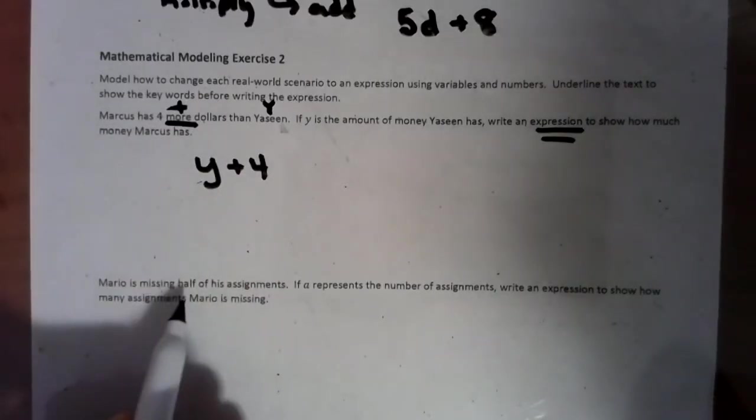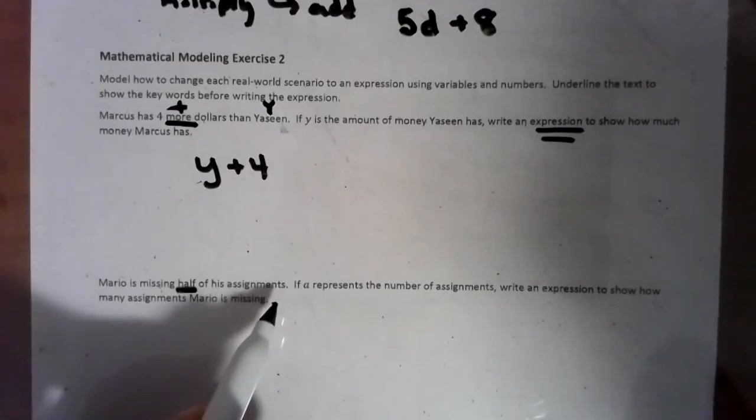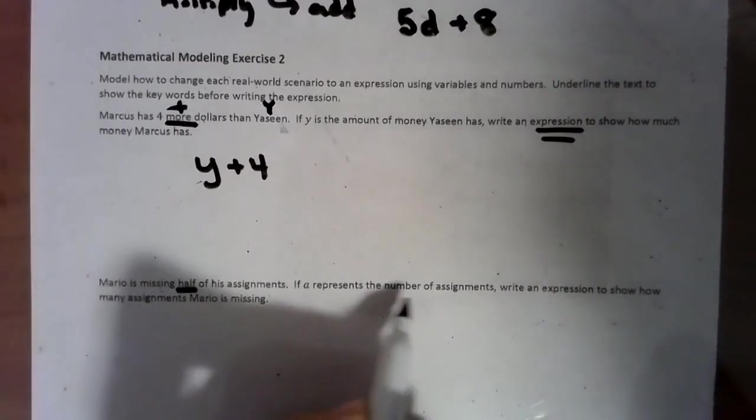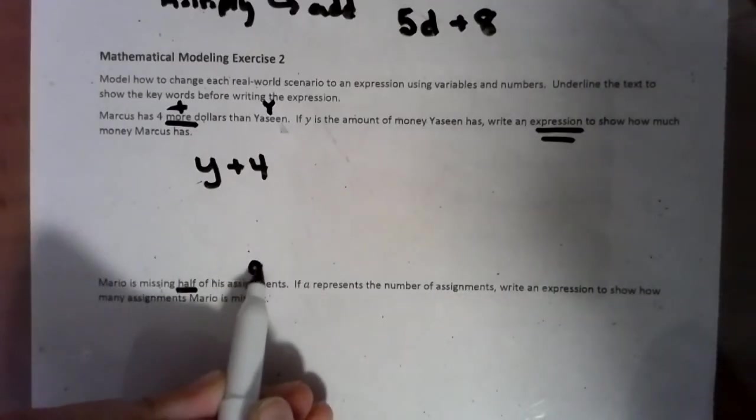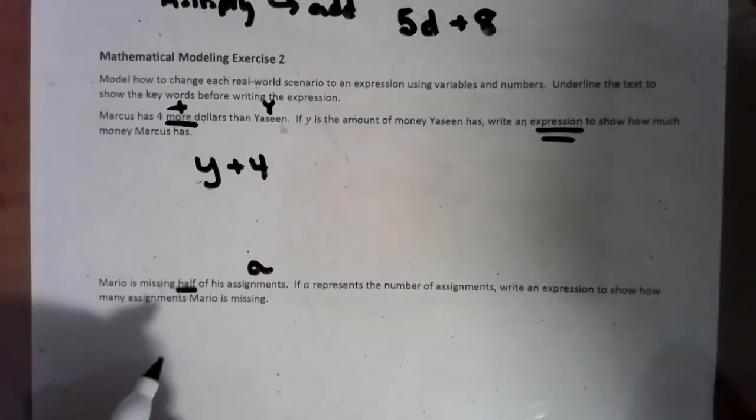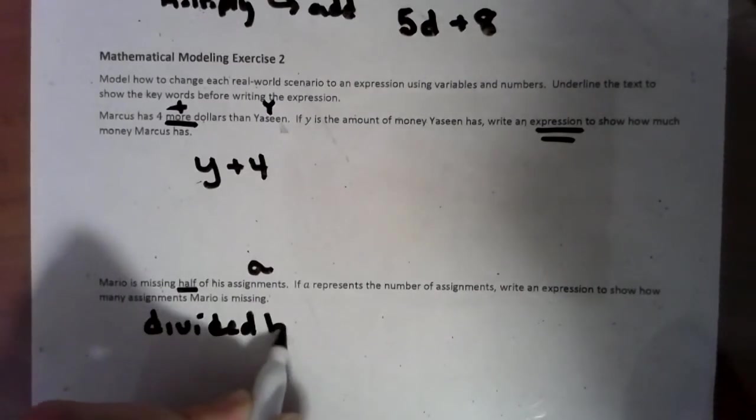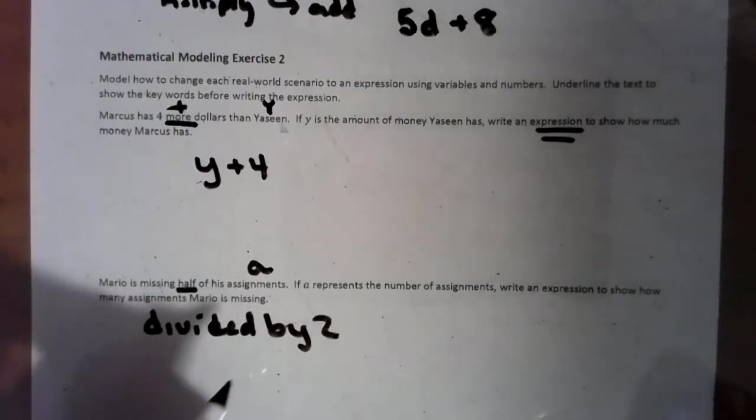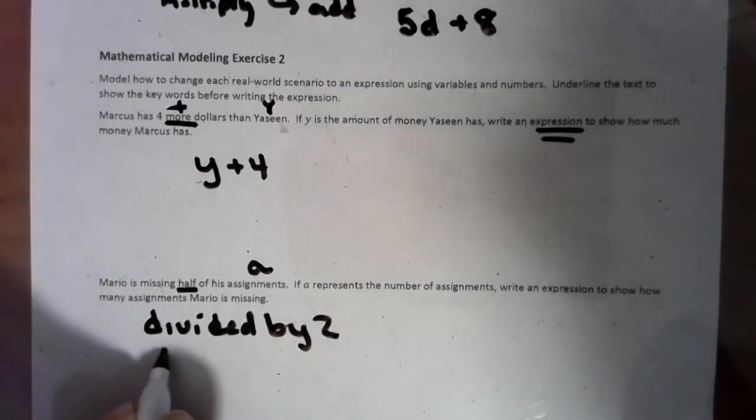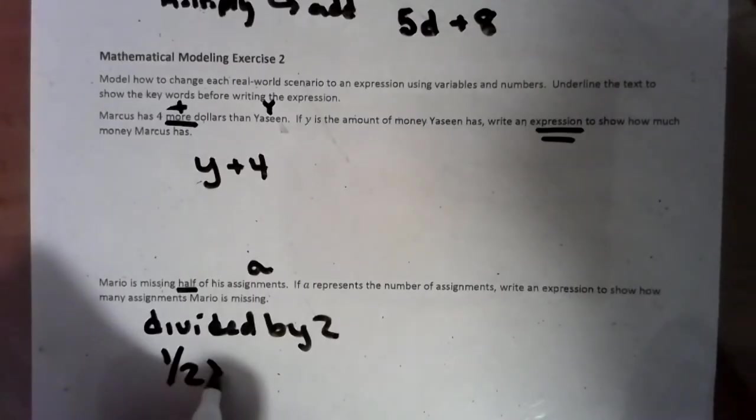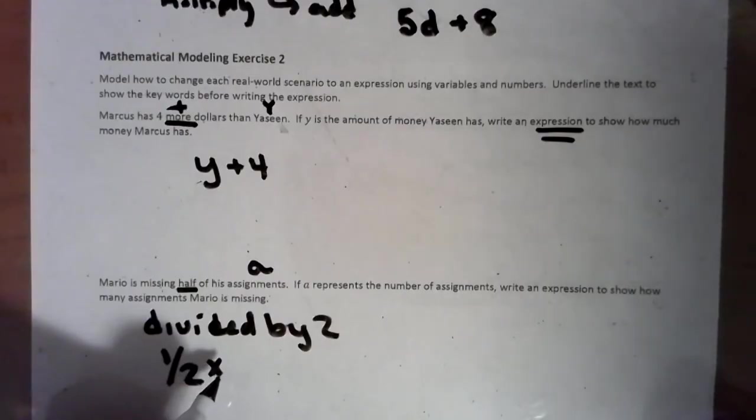Now let's look at Mario. Mario is missing half of his assignments. If A represents the assignments, I'm just going to put a little A above this. Half can be written in a couple of different ways. Half could mean divided by two, like a candy bar splitting it in half, or you could be multiplying by a half, like half of something. I take half of a candy bar or I divide it in two. The same thing is going to take place.